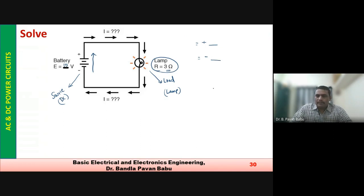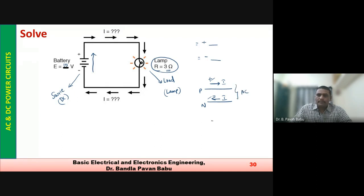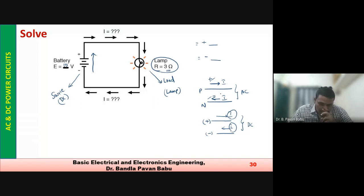In single phase supply, phase and neutral carry current in opposite directions. For DC, the magnitude never changes — only the sign (positive or negative) changes. We consider current flowing from lower to higher potential (minus to plus). Since we don't know the exact direction, we assume it and verify from the result.